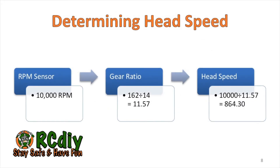In this example, the motor is rotating at 10,000 RPM. The gear ratio is 11.57. These values give us a head speed of approximately 864 revolutions per minute.